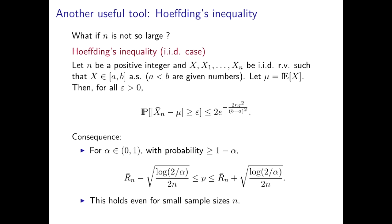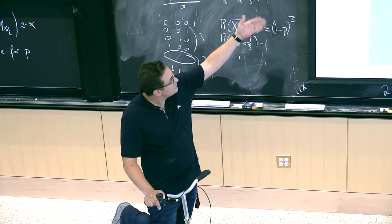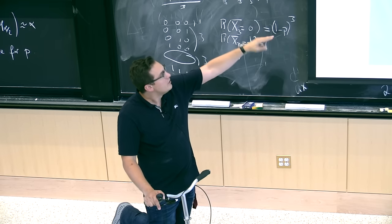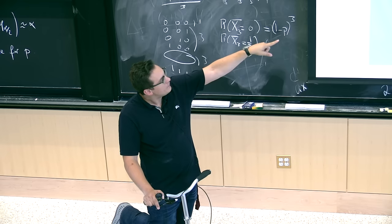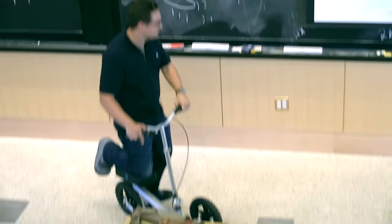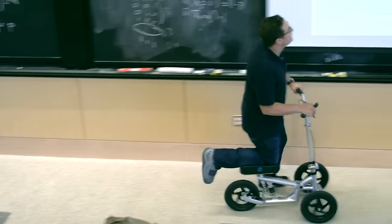Hoeffding's inequality is one of the most useful inequalities. If any of you does anything related to algorithms, you've seen it before. It tells you something about bounded random variables — Bernoulli random variables are bounded between 0 and 1. For any given epsilon, what is the probability that xn-bar goes away from its expectation by more than epsilon? It decreases similarly to the tail of a Gaussian.